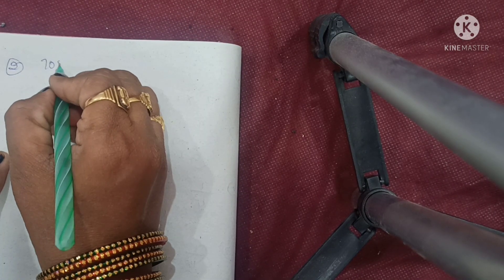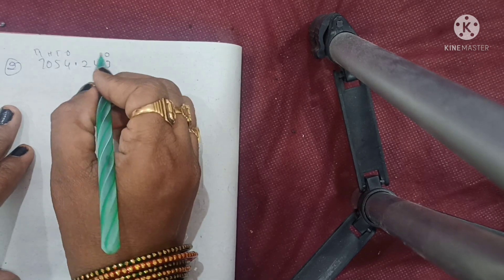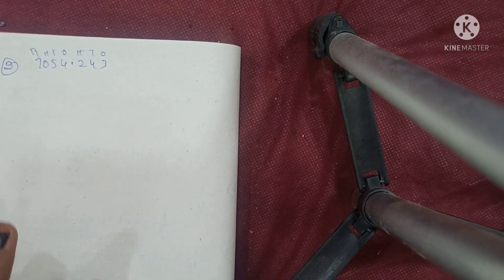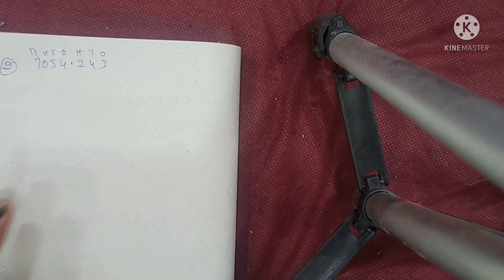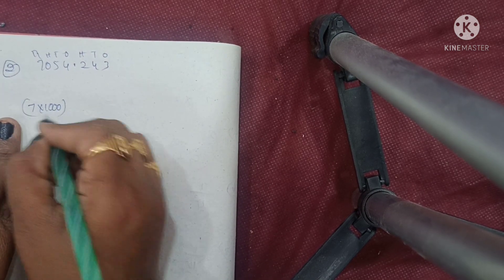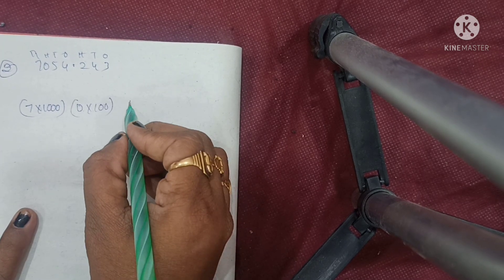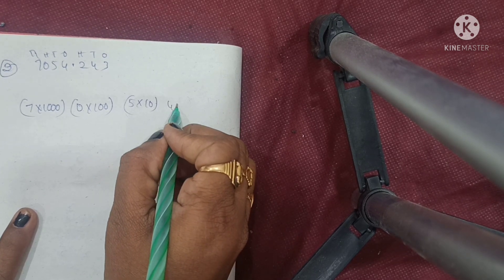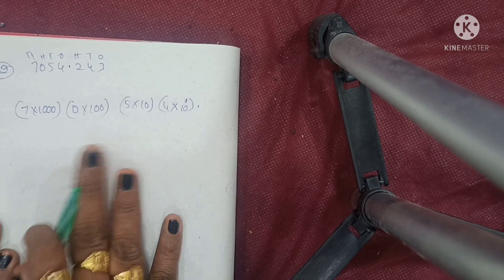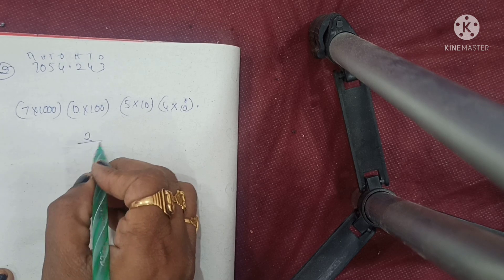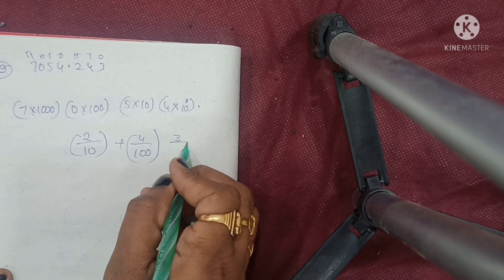Second question: 7054.0243. Place values before the decimal: thousands, hundreds, tens, ones. Writing: 7 into 1000, plus 0 into 100, plus 5 into 10, plus 4 into 10 power of 0. After decimal: 2 by 10, plus 4 by 100, plus 3 by 1000.